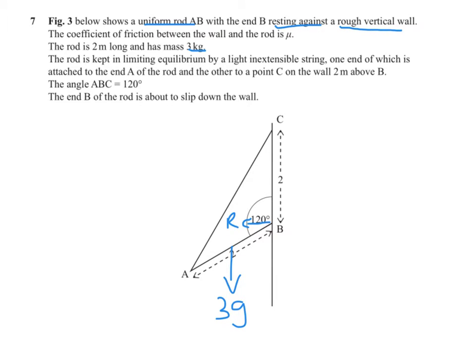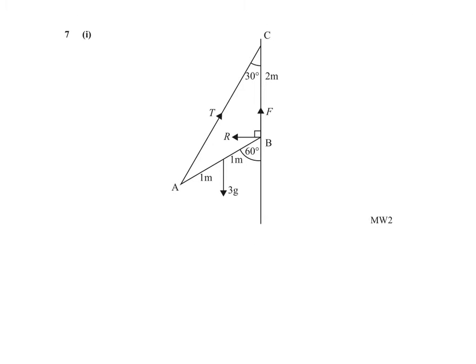Friction opposes motion, so what way will the rod go? It will fall down the wall, so friction acts up. Rod is kept in limiting equilibrium by a light string, so we have to have tension in the string.